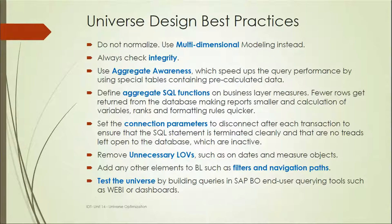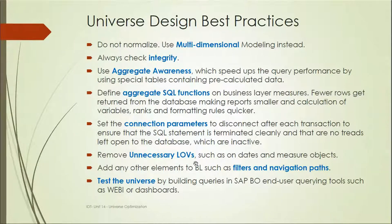Do not normalize — use multi-dimensional modeling instead. Always check integrity using the tool's built-in integrity check function. Use aggregate awareness to improve query performance, and use aggregate SQL functions on business layer measures. Set the connection parameters as already discussed, remove unnecessary list-of-values that are not required, and add elements such as filters and navigation paths if needed. Test the universe by building queries in the Web Intelligence viewing and user querying tools.